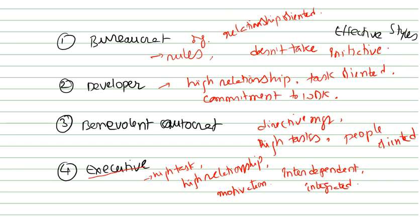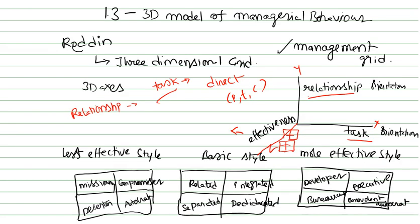He took information from the management grid and tried to plot a graph representing a model in 3D representation. In that model, he took 3D: relationship, task orientation, and effectiveness. According to effectiveness, whether they are basic style, less effective, or more effective.